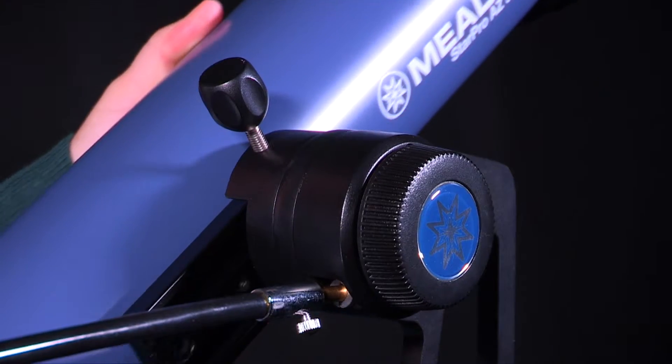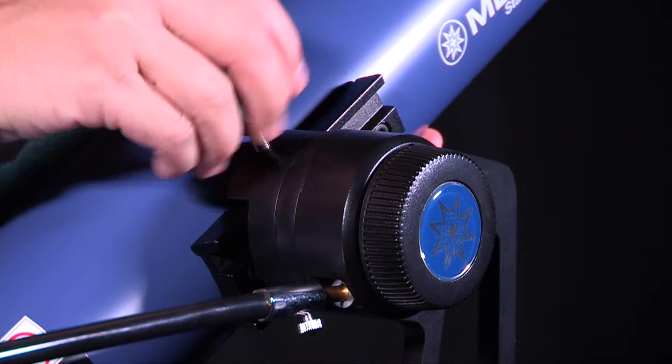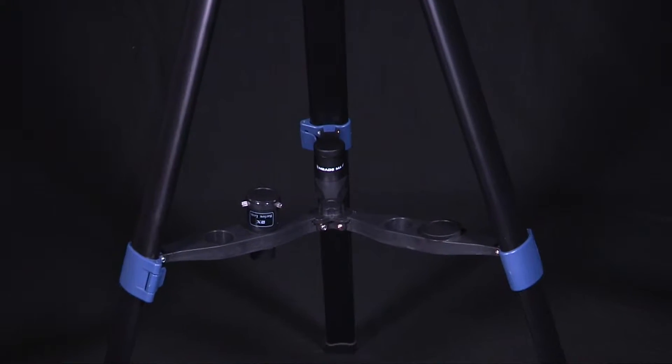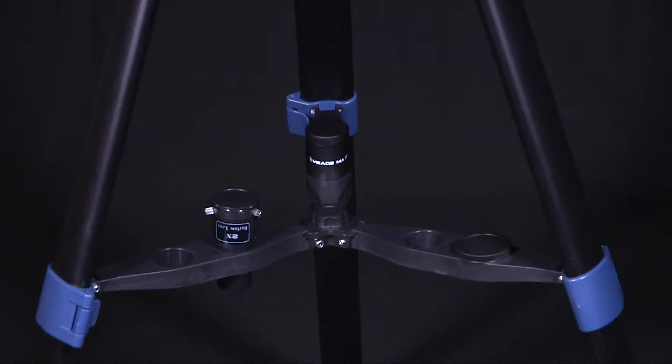This new mount also features a Vixen-style dovetail receiver, giving you the ability to use different optical tubes. Easily organize your accessories with the integrated accessory holder located on the sturdy tripod.